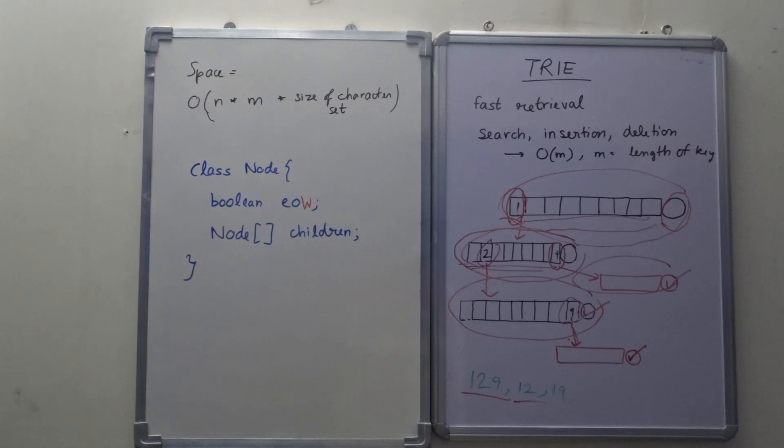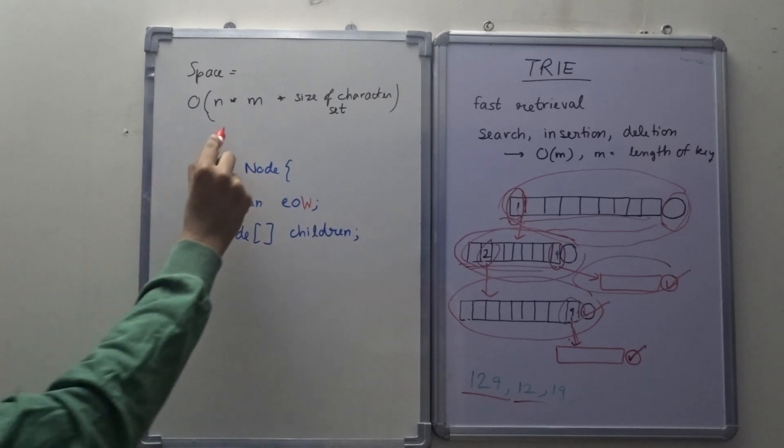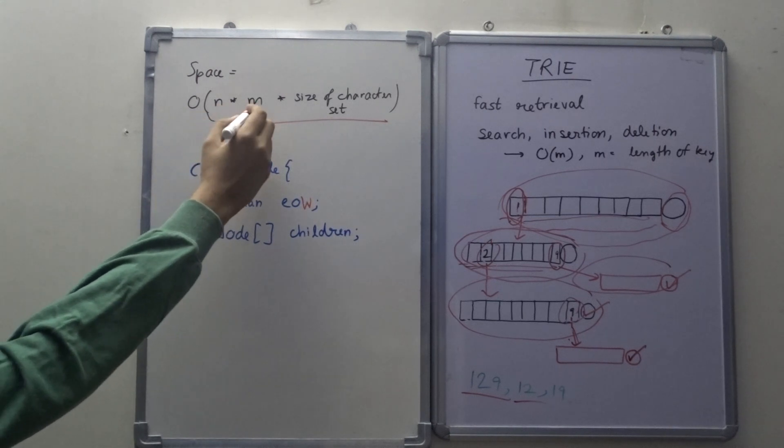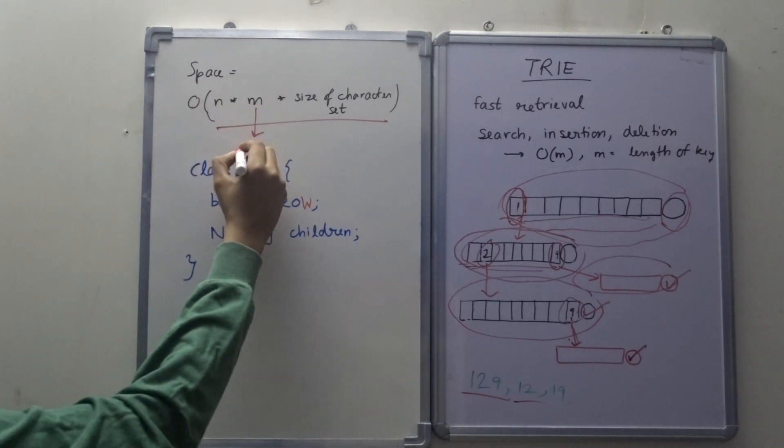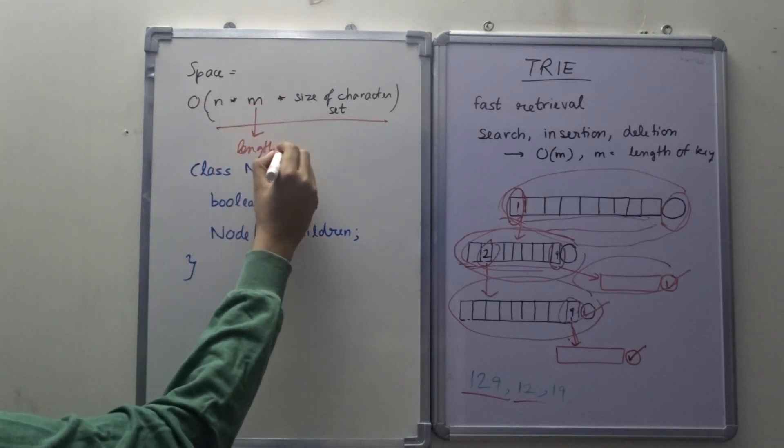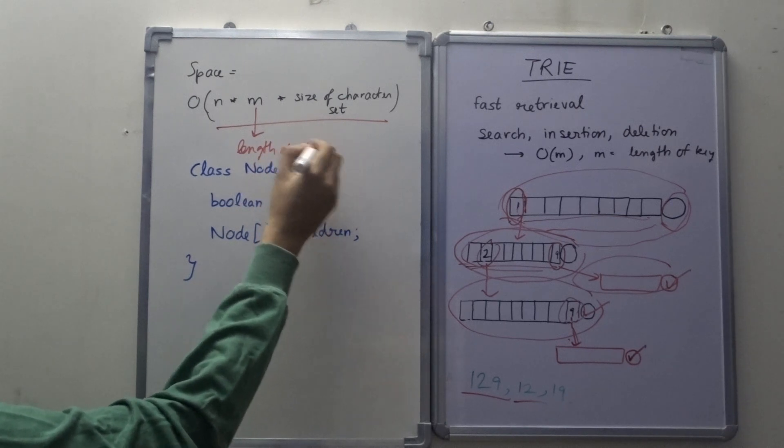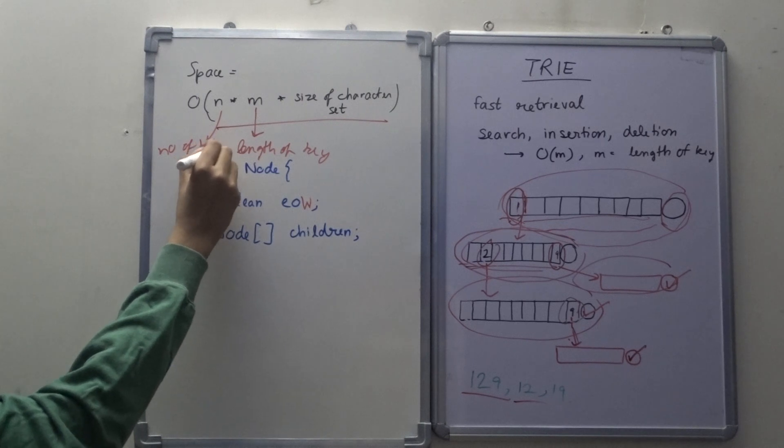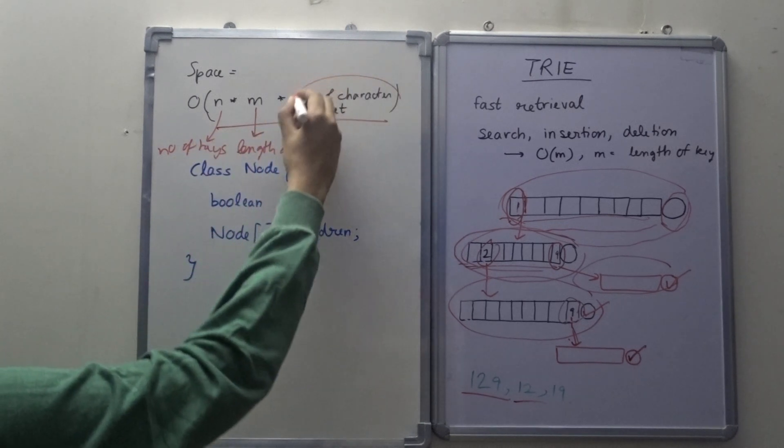Now this fast time comes with a trade-off. That is a space trade-off, so it takes up a lot of space. The space is big O(M × N × size of character set), where M is the length of the key, N is the number of keys in the Trie, and size of character set.